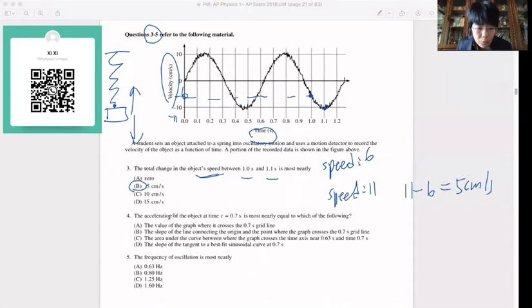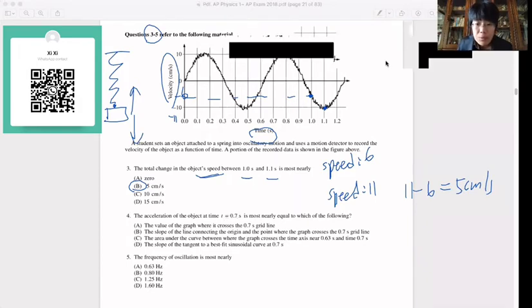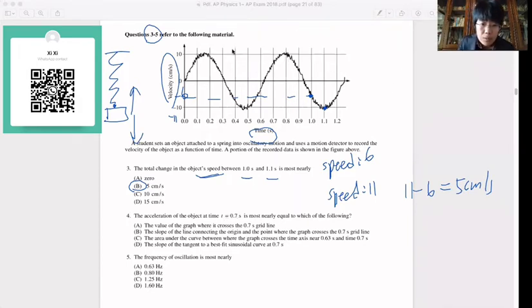For question 4, the acceleration of the object at time t where t equals 0.7. 0.7 here is going to be here. So the acceleration is most nearly equal to which of the following. If we have a velocity, remember, if we have velocity and we want to change to acceleration.